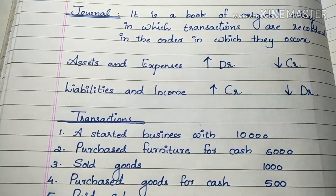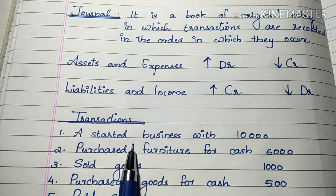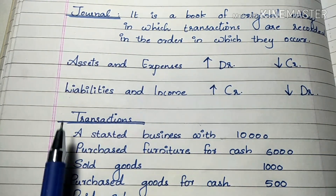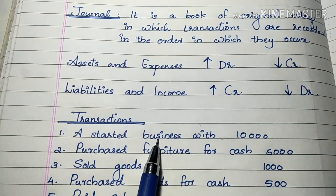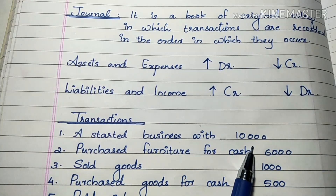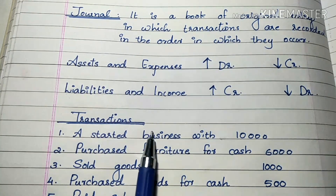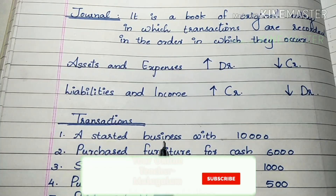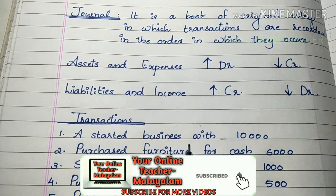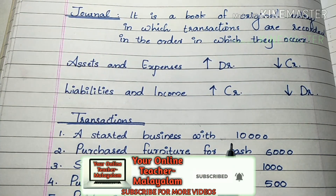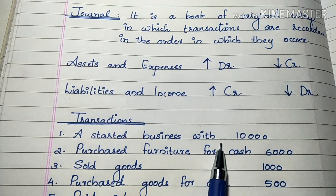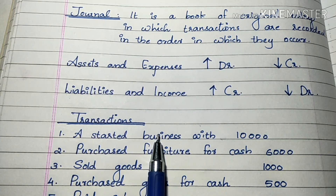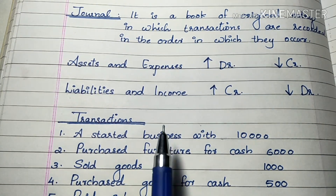The first transaction: you started a business with 10,000. What kind of transaction is this? Every transaction has a debit and a credit — two accounts are involved.